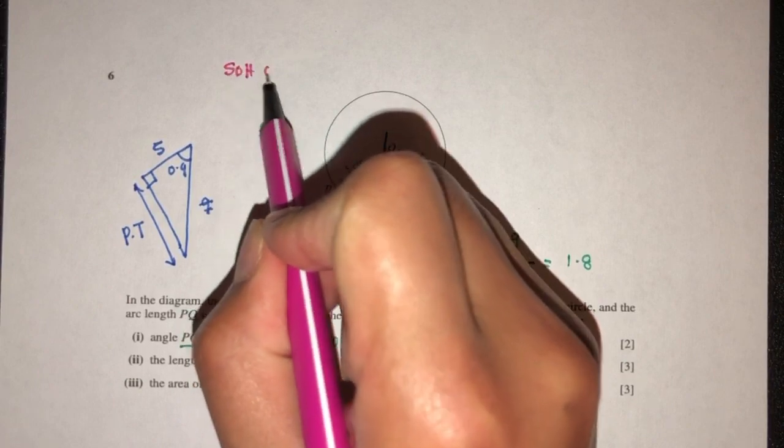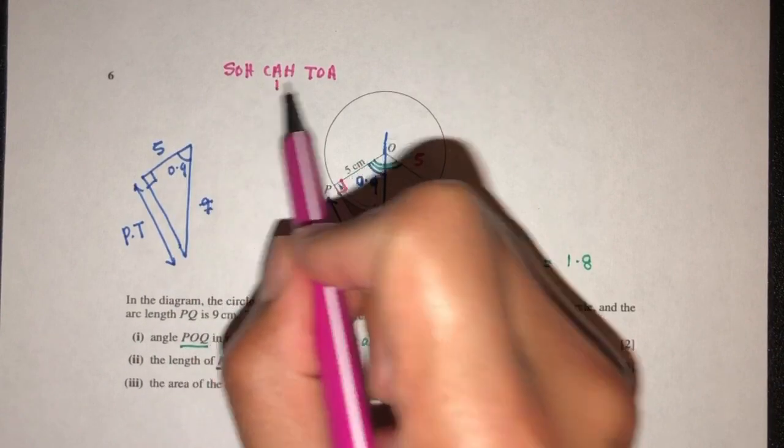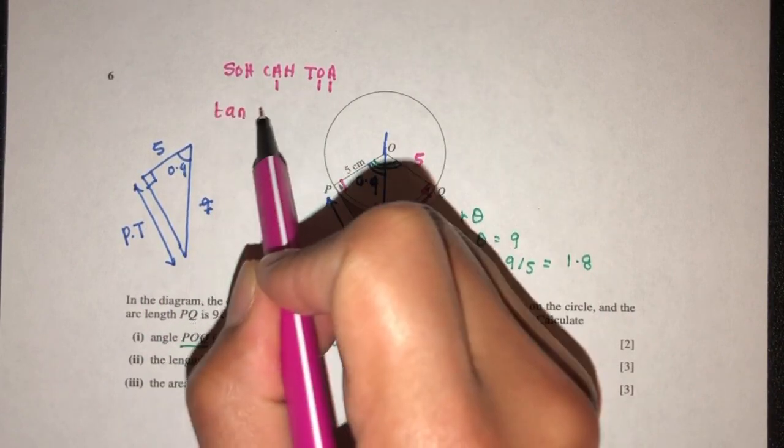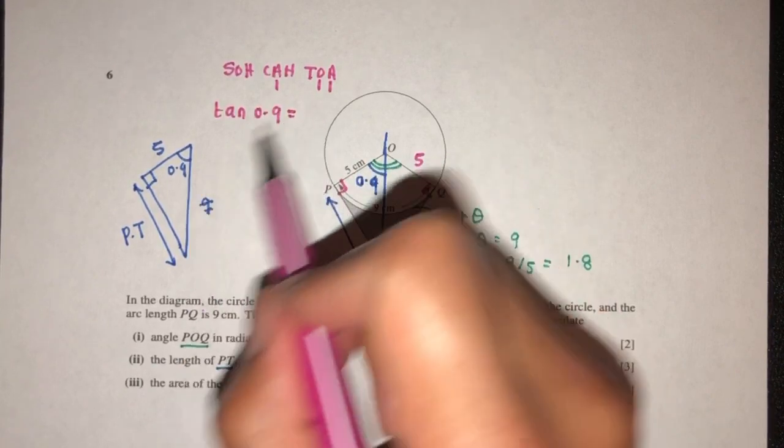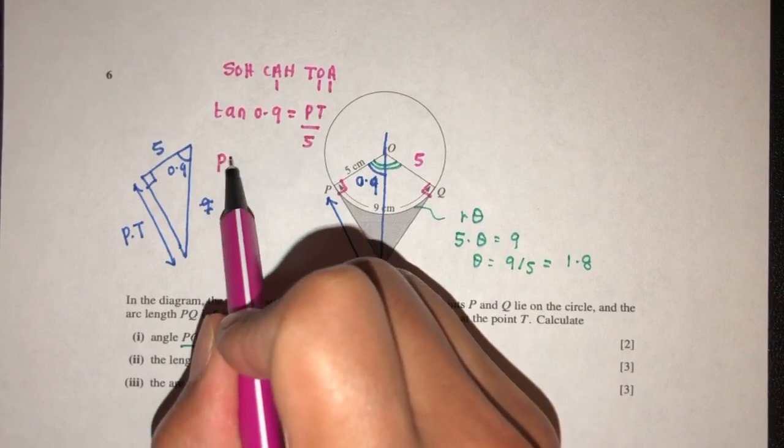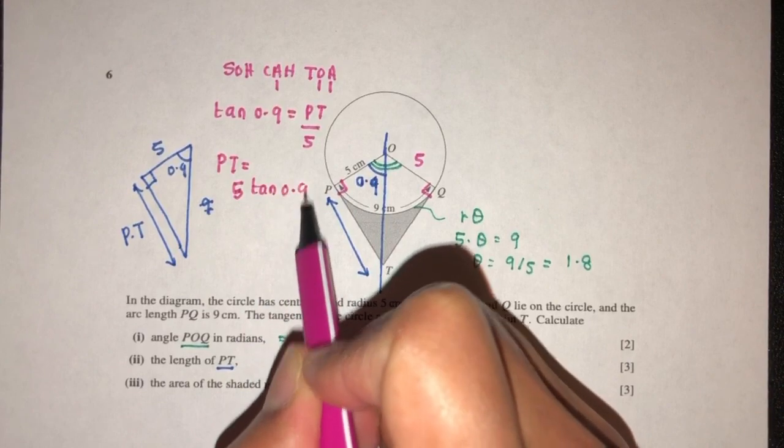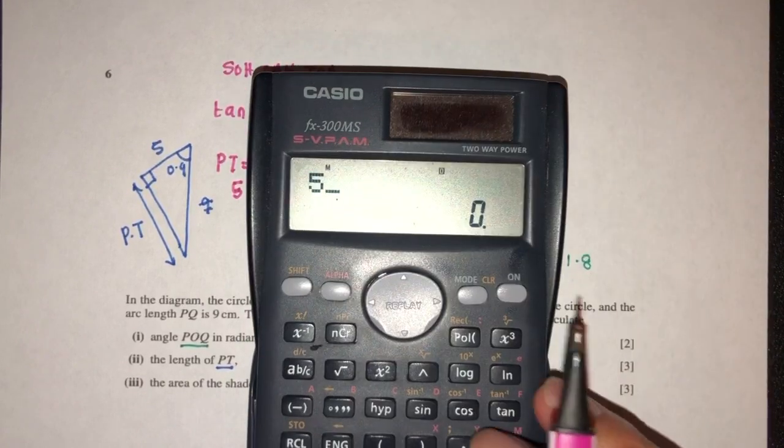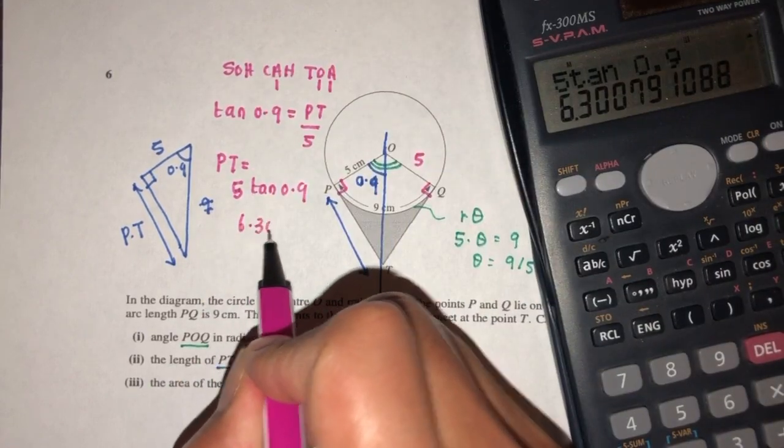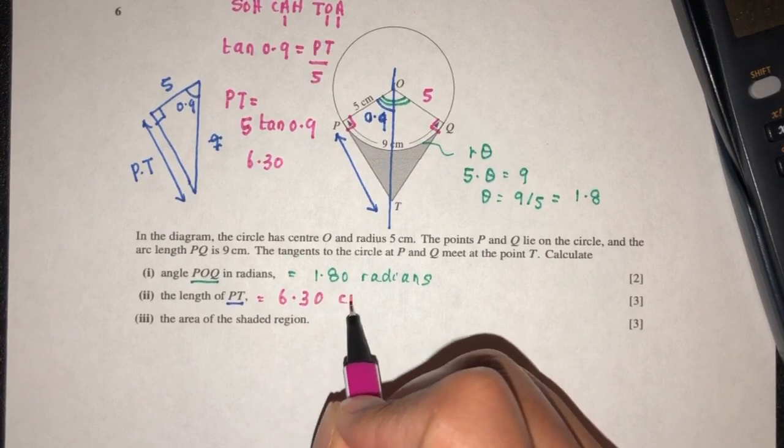This is the adjacent side, 5. We're trying to find the opposite side. So we use tan of 0.9. The opposite side PT over the adjacent side 5. Therefore PT equals 5 times tan of 0.9. Using radians, that equals 6.30 centimeters.